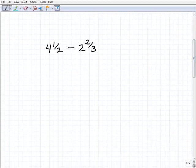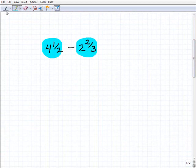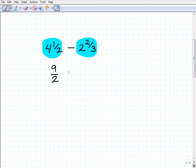If I have 4 and 1 half minus 2 and 2 thirds, what do I need to do? Both of these fractions are in the form of what we call mixed numbers. I don't particularly like to work with mixed numbers. Let's turn them into improper fractions. So we have to go 2 times 4. That's 8 plus 1. So that's going to be 9 halves. Hopefully you understood what I just did there, just changing this fraction and writing it in a different way.